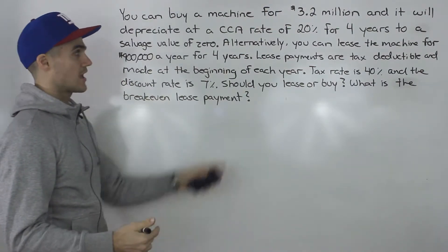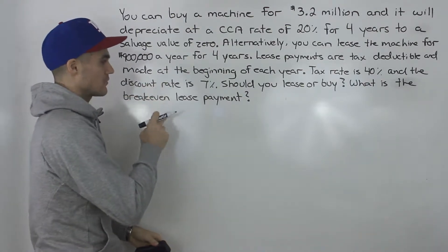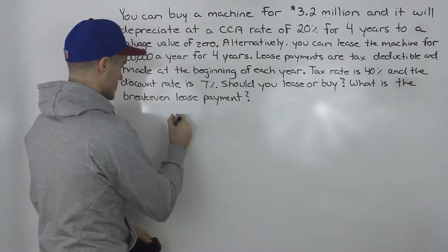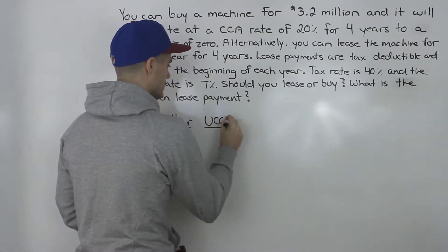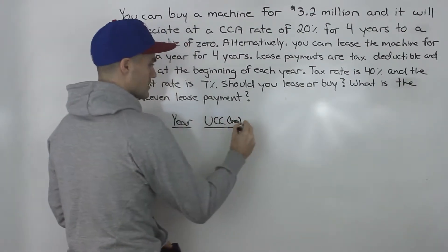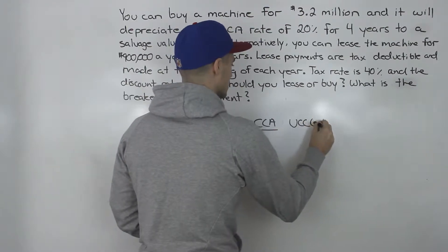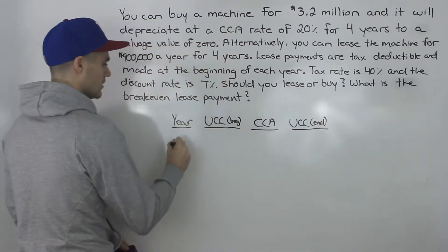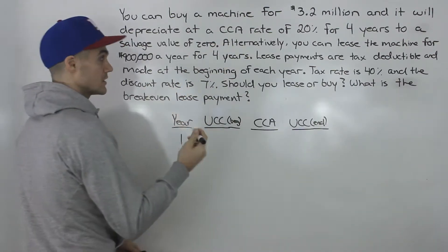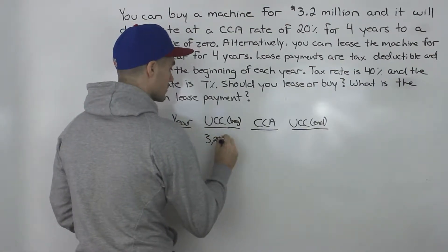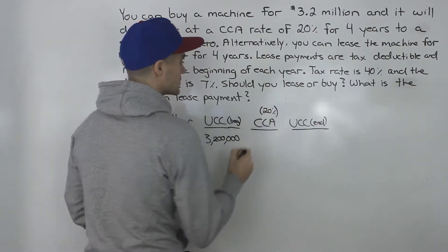Pretty much everything is exactly the same except for the depreciation. So instead of straight line, let's create a CCA schedule. We're going to have a year column, the UCC of the machine at the beginning of each year, the CCA, and then the UCC at the end of each year.